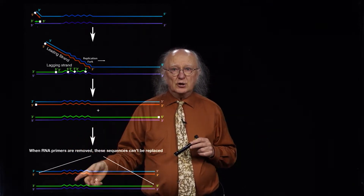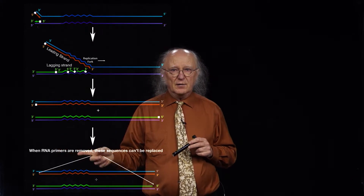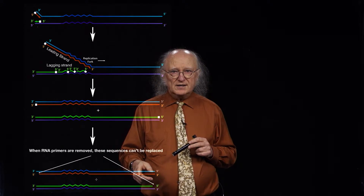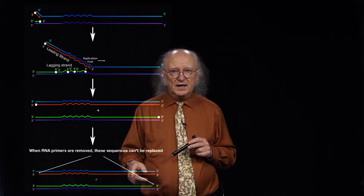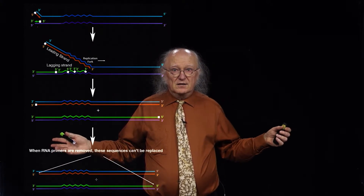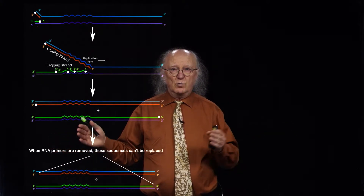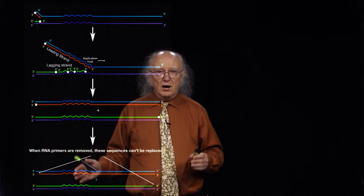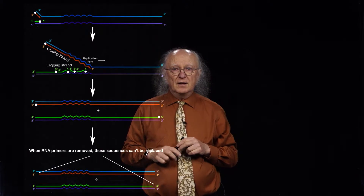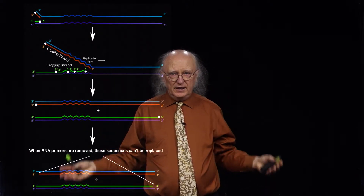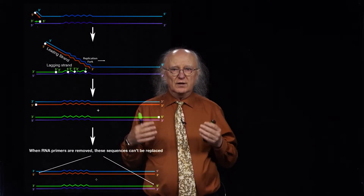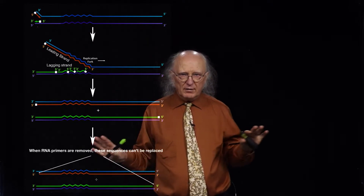Once that lost piece is there, when the new strand gets copied in the next round of replication, the sequence that was at the end will be missing. Each round of replication results in a shortening of the DNA compared to the round before it. That means the ends of the linear eukaryotic DNA chromosomes shorten with each round of replication — a very important consideration.